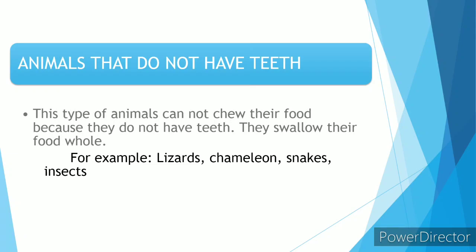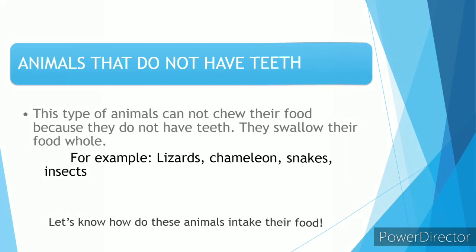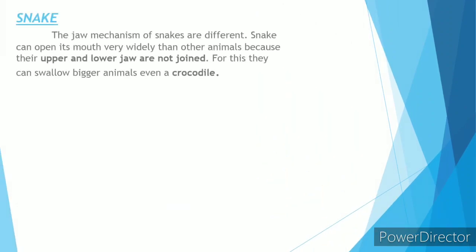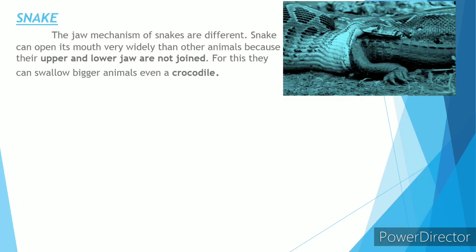Let's see some examples. The first example is the snake. A snake is a kind of animal that does not have any teeth. They have a special jaw — their jaws are not joined like ours. They can open their jaw very widely so that they can engulf or swallow bigger animals.